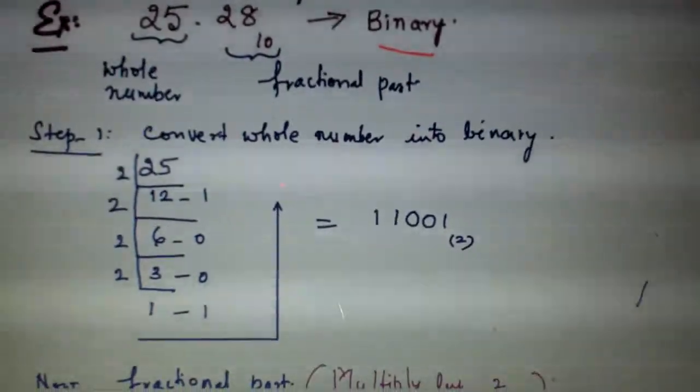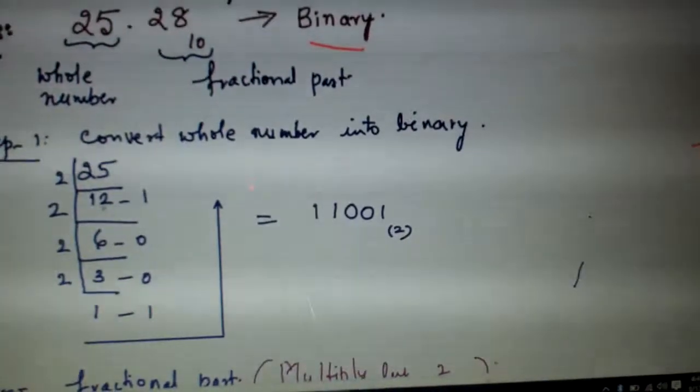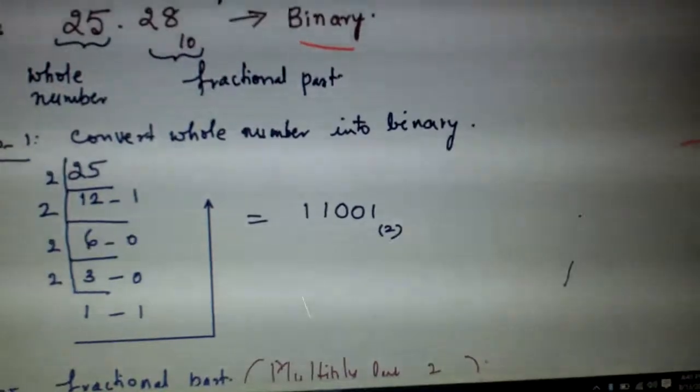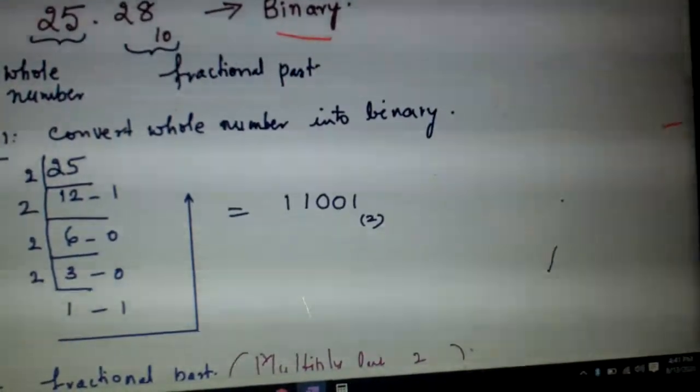For that, what will you do? You go on dividing it by 2. When you divide by 2: 25 divided by 2 equals 12 remainder 1, 6 remainder 0, 3 remainder 0, 1 remainder 1. And write the remainders in the reverse order.